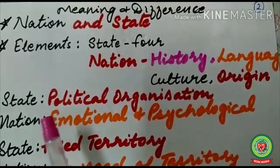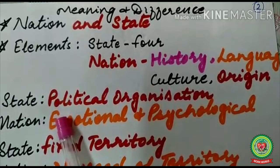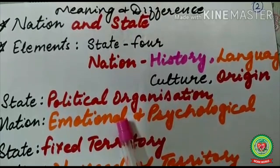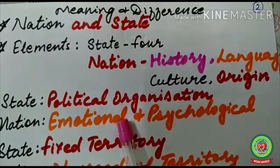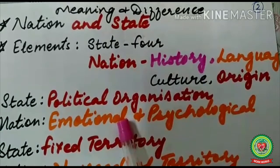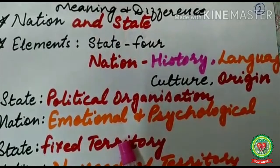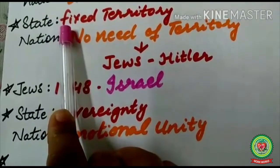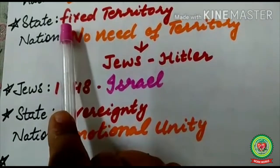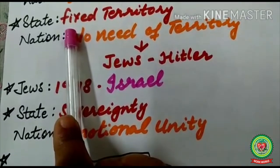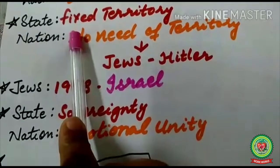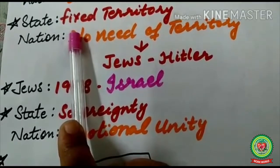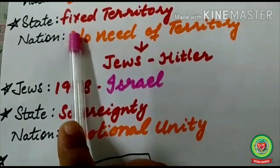On the other hand, a nation is a large united population full of emotional and psychological bonds. India is our motherland whom we love as our nation — it is our emotion towards it. Nation provides us emotional unity. Further, the state is a territorial entity; it is essential for a state to possess a fixed territory. But in the case of a nation, a fixed territory is not an essential requirement.